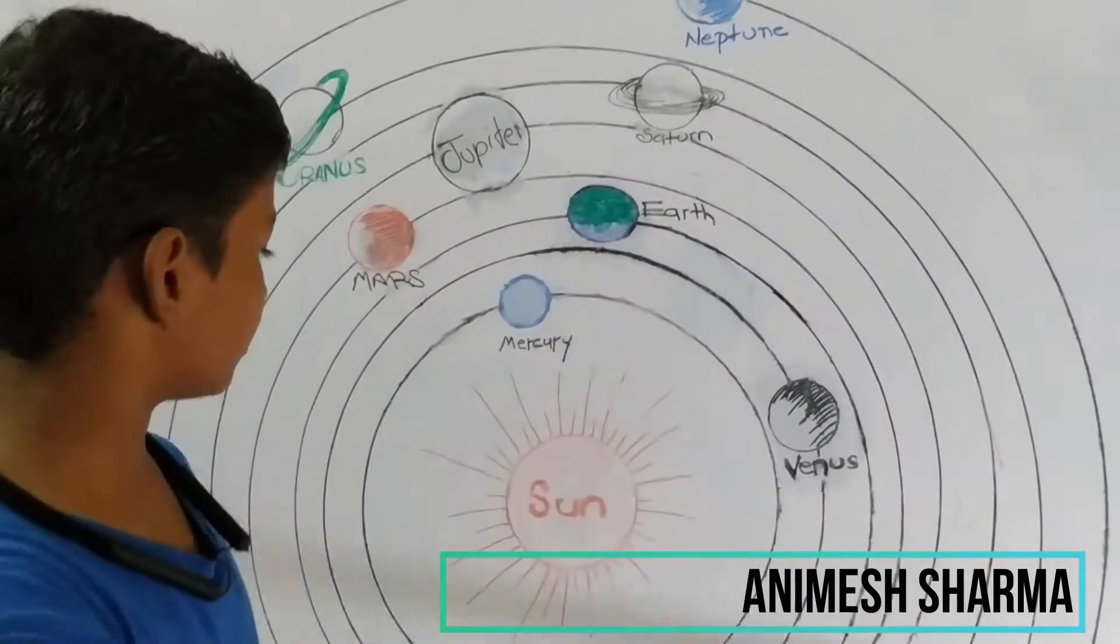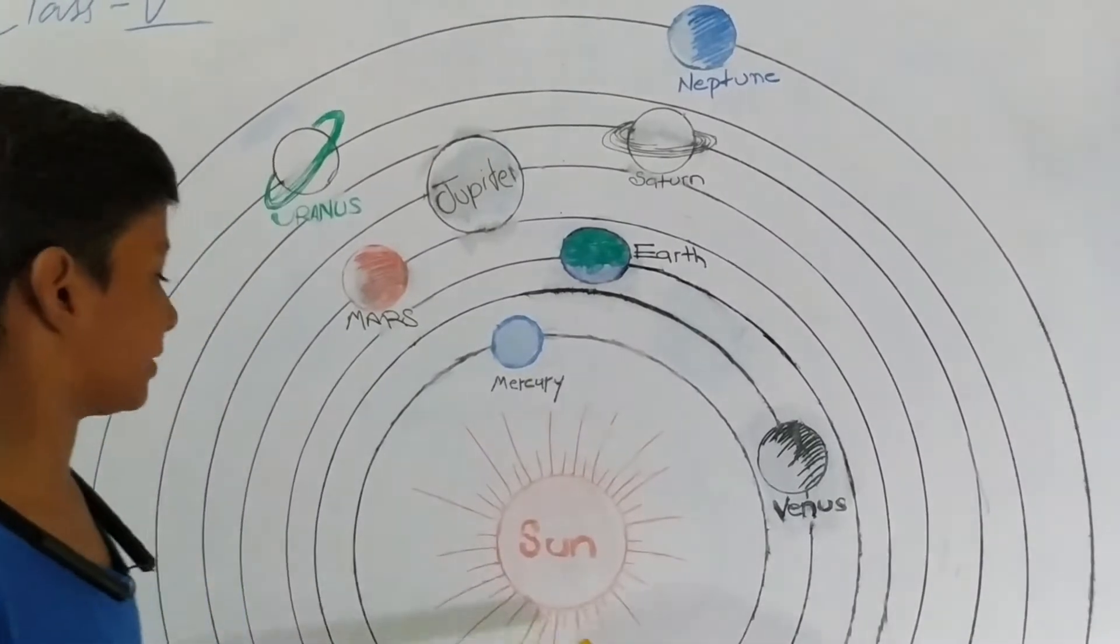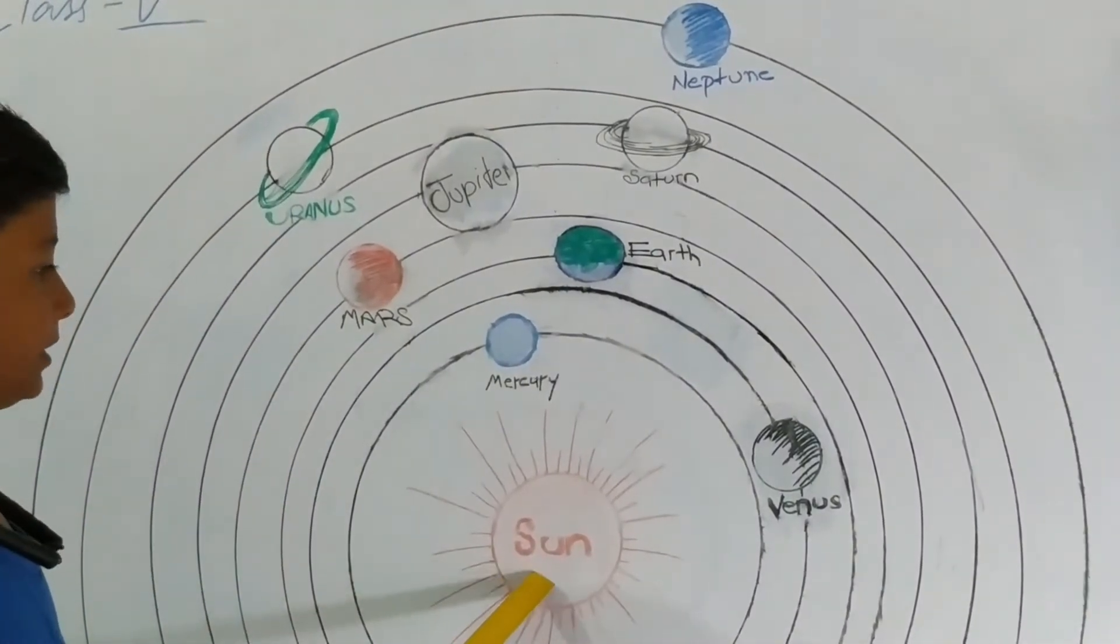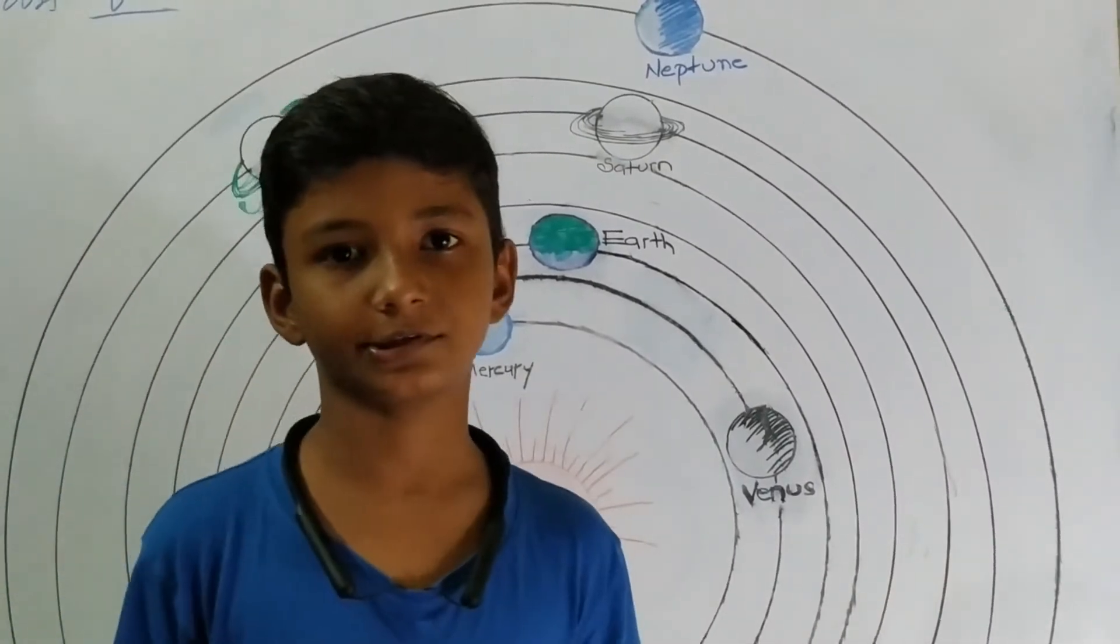Today's topic is our solar system. What is our solar system? Our solar system is made up of the Sun and its eight planets. The Sun is the central part of the solar system.